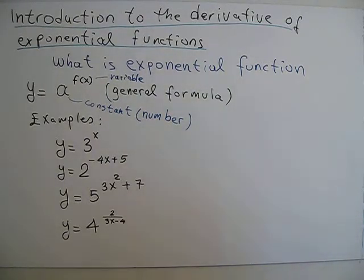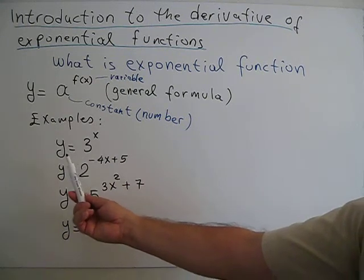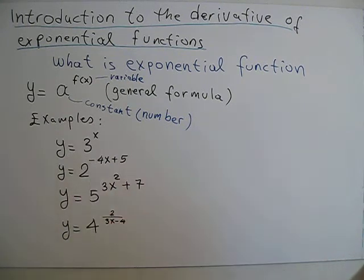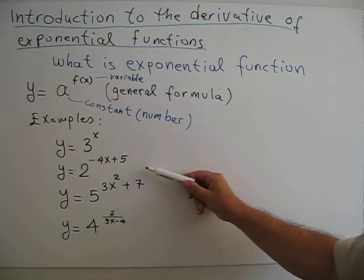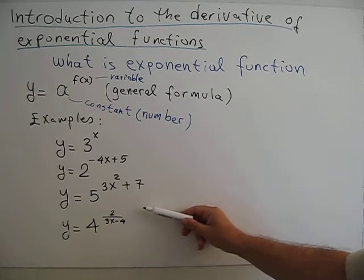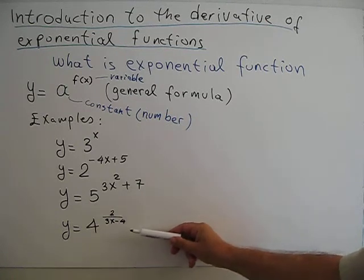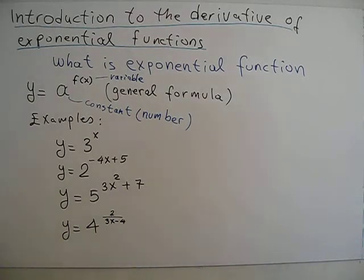Some typical examples of exponential functions are: y = 3 to the power x, y = 2 to the power (negative 4x + 5), y = 5 to the power (3x² + 7), and y = 4 to the power (2/3 x − 4).